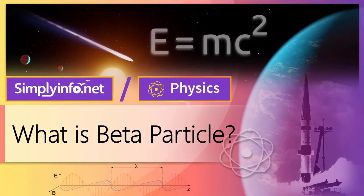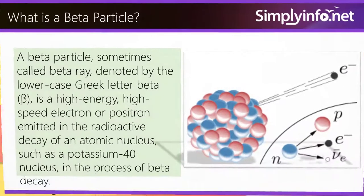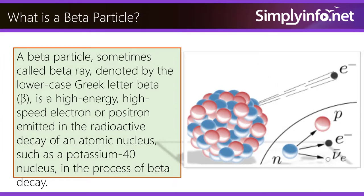What is a beta particle? A beta particle, sometimes called beta ray, denoted by the lowercase Greek letter beta, is a high-energy, high-speed electron or positron emitted in the radioactive decay of an atomic nucleus, such as a potassium-40 nucleus, in the process of beta decay.